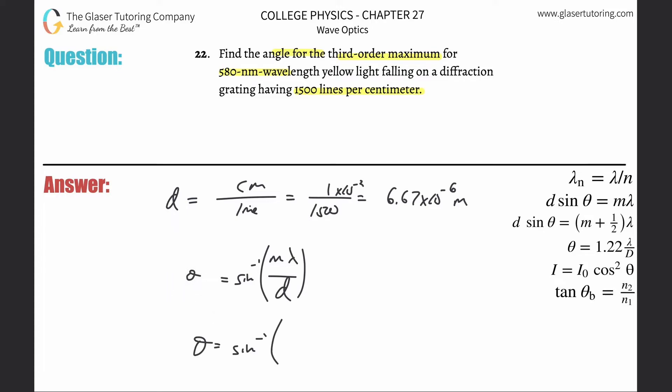Now literally all you've got to do is just plug it in. So this is third-order max, so m is 3. The wavelength they told you is 580 nanometers, convert that into meters, times 10 to the minus 9th, then divide the whole thing by the distance, which was 6.67 times 10 to the minus 6.